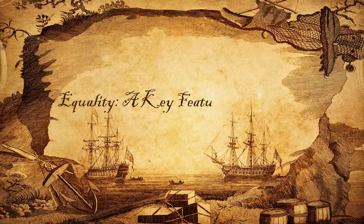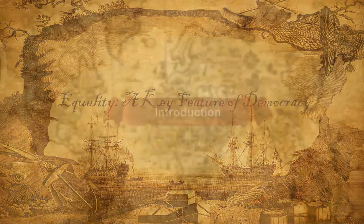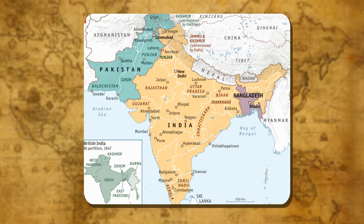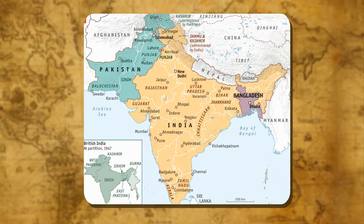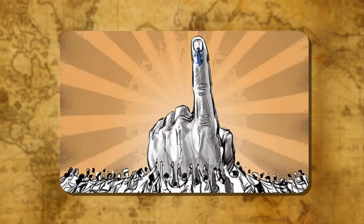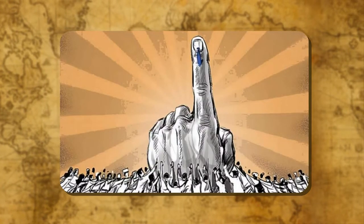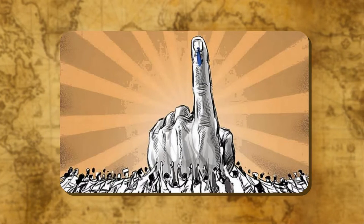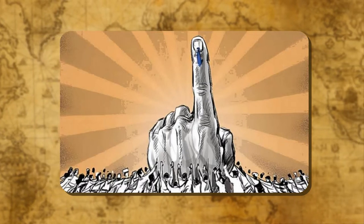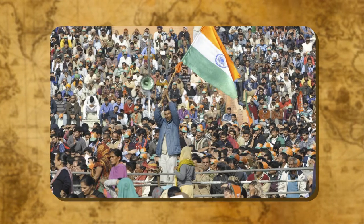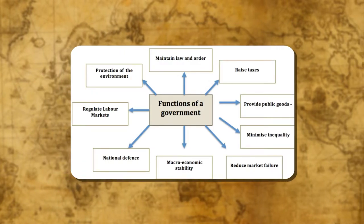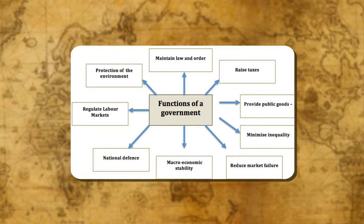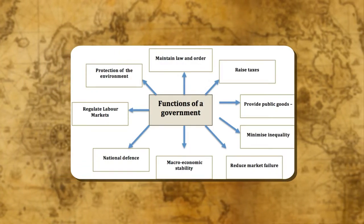Equality — a key feature of democracy. India has a democratic government which provides equality to all the people. Equality is the basic feature on which the stability of democracy depends. It influences all aspects of functioning of the government.